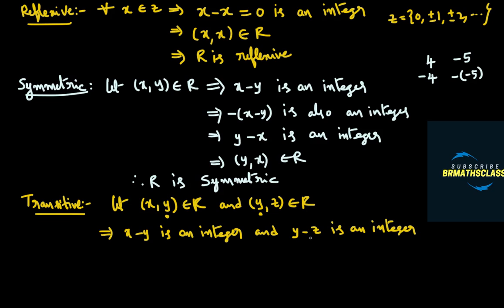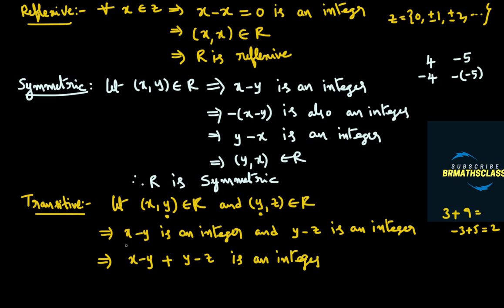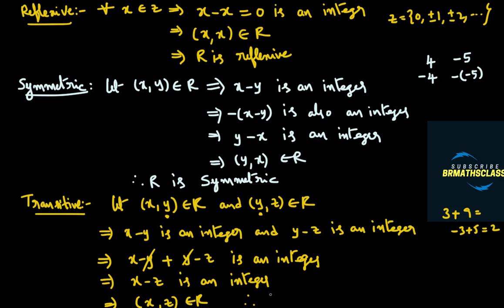If (y, z) belongs to R, then y minus z is an integer. If x minus y is an integer and y minus z is an integer, the addition of these two is also an integer, since the sum of two integers is always an integer. For example, 3 plus 9 is an integer; minus 3 plus 5 is also an integer. Now, (x minus y) plus (y minus z) gives x minus z, because the y terms cancel. So x minus z is an integer. From the definition of the relation, the ordered pair (x, z) belongs to R. Therefore, the relation R is transitive.